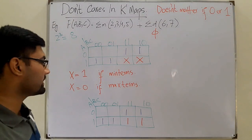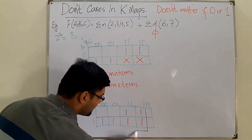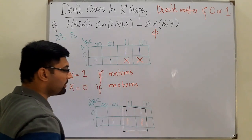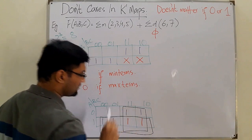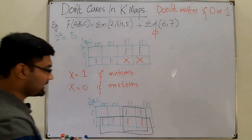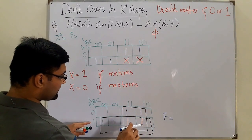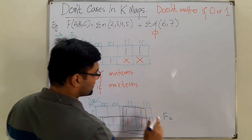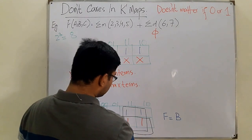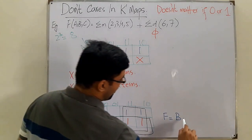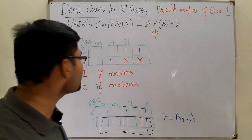We should combine the maximum possible group size. The priority is eight — we don't have eight, so we combine four. This is the first group of four, and the next group we can also combine these four. So now what is the function value? In the first group, 'a' is changing from 0 to 1 but 'b' is not changing. In the second group, 'a' is not changing. So the function is b OR a, i.e., a + b.